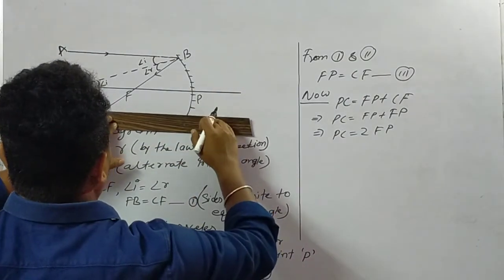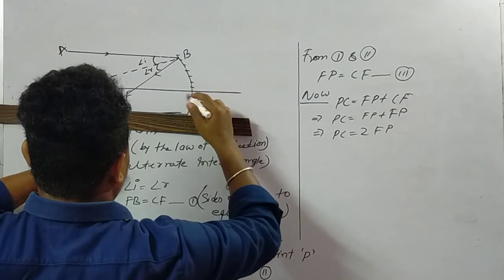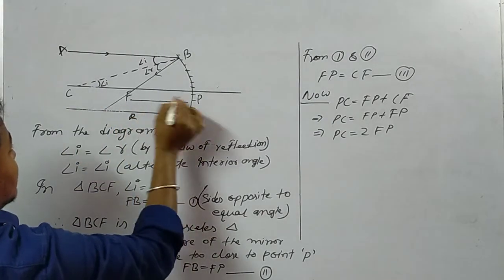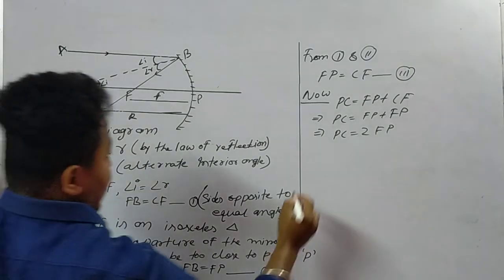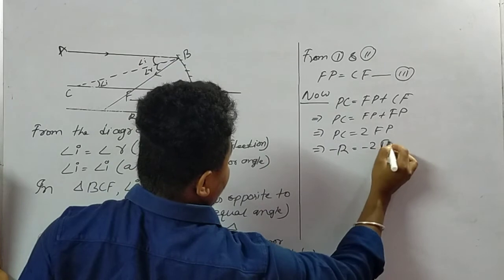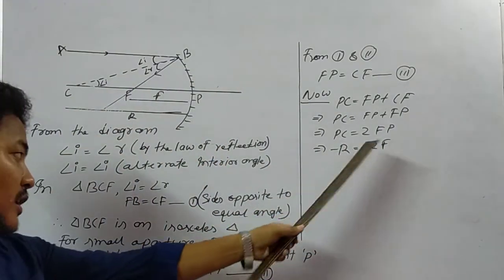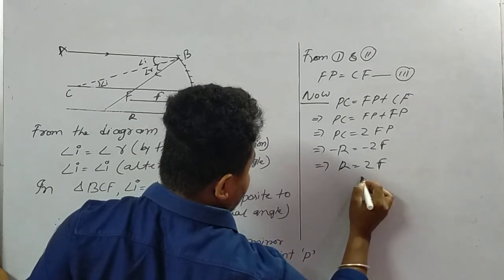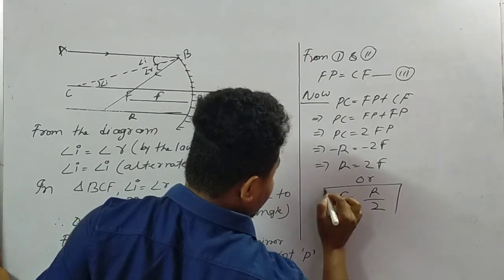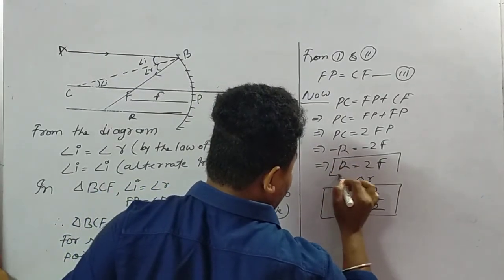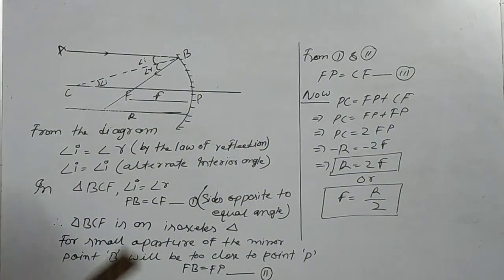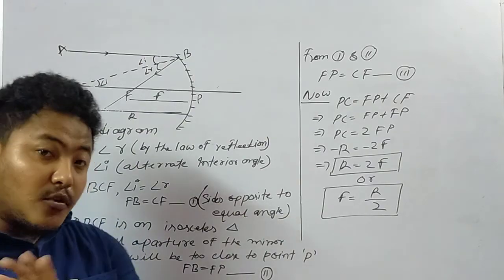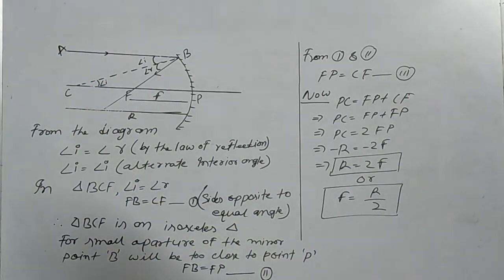So PC equals 2FP. Now, PC is the radius of curvature R, and FP is the focal length f for this mirror. Therefore R is equal to 2f, or f is equal to R by 2. Both R and f are negative in the case of a concave mirror. This is the relation between radius of curvature and focal length for a concave mirror. In the next class we will discuss the convex mirror. Thank you.